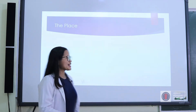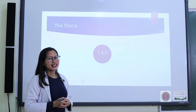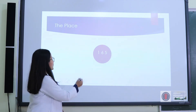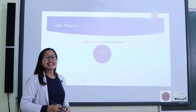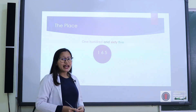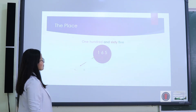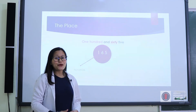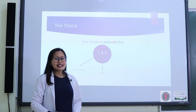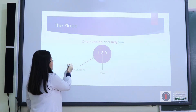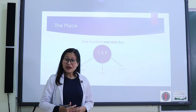Now, remember the place. I have a number here — can you say the number out loud? Yes, it's one hundred and sixty-five. Talking about the place, we have three digits here. One is for the hundreds place. Six is for tens. And five is for ones. Do you understand?